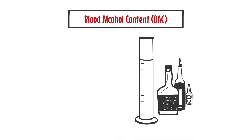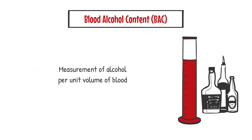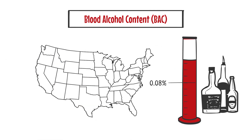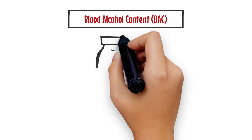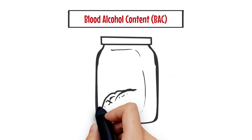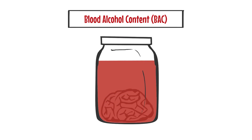The BAC is a measurement of the amount of alcohol per unit volume of blood. All US states recognize a 0.08% BAC as a driving under the influence of alcohol violation for adult drivers who possess a standard driver's license. This begs the question: why do laws prohibit a certain level of alcohol in the blood? In short, the blood bathes the brain, and the highly blood-supplied brain is the target organ for alcohol, leading to impairment.